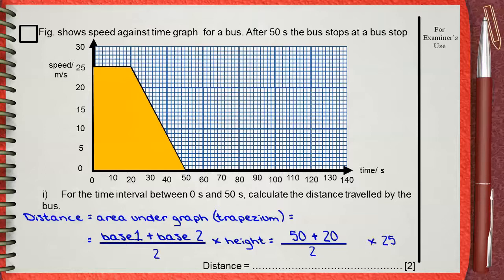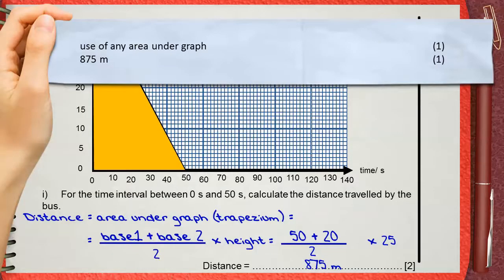This shows that the distance is 875 meters. The two marks are given for one mark for the use of the idea of area under graph, and the second mark is for the final answer 875 meters.